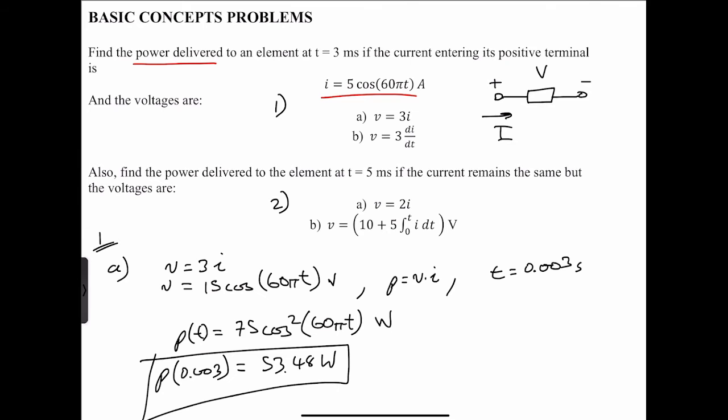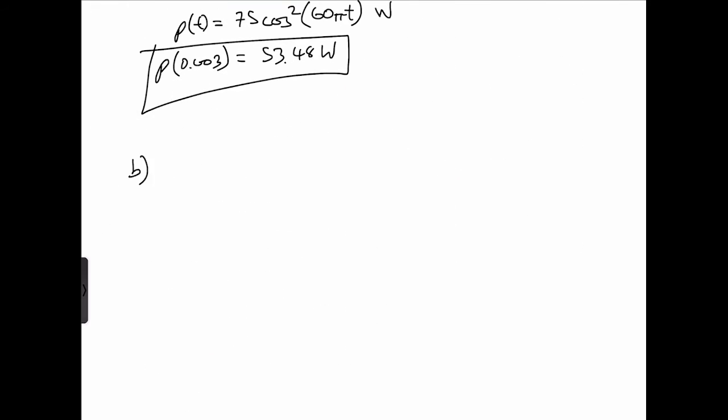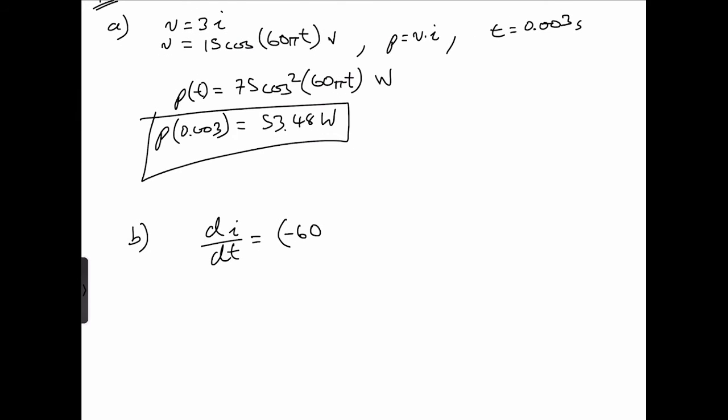So if we then go ahead and differentiate the current, and then multiply it by three, we're going to get the v in this case, and then we're going to re-multiply that by i to get the power. So that will be b. So b, we can then go ahead and say that di/dt is equal to, the parentheses comes out. So we take this out to be negative 5 pi. And we'll include 5 right there.